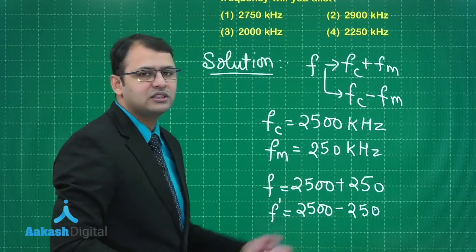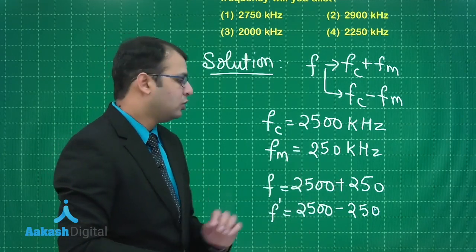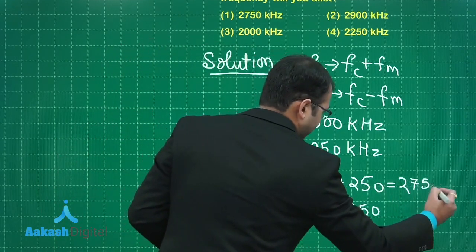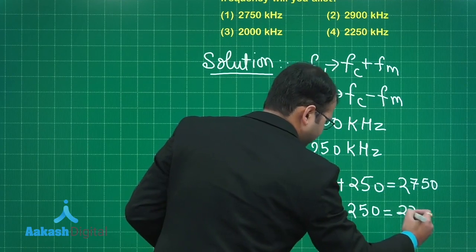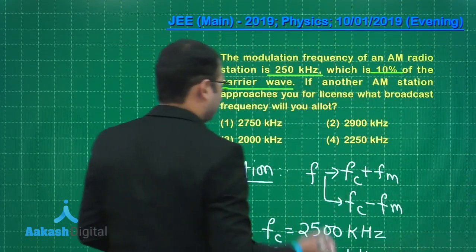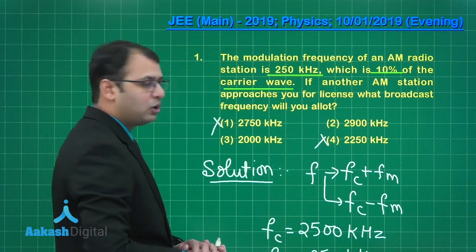So this frequency set is not available for the next broadcast licensing. Which set can we use? This would be 2750 kilohertz, this would be 2250 kilohertz. In the options you will see that these will be canceled. So now out of these two, one can be the option.